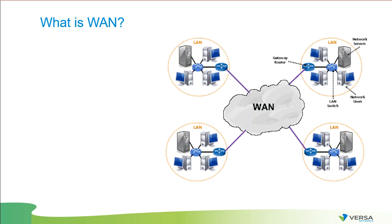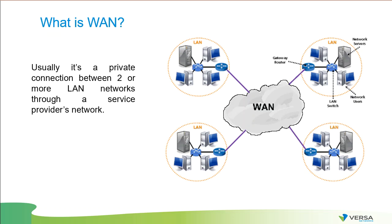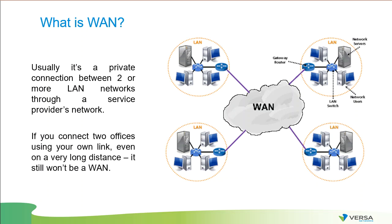What is WAN? By definition, WAN is usually a private connection between two or more LAN networks through a service provider network. If you connect two offices of your own with your own link, even on a very long distance, it still won't be a WAN. For a WAN connection to be called WAN, it should be something provided by a service provider, so by a third party. Historically, WAN networks were used to connect offices between multiple cities to provide connection for services located in different states or cities.